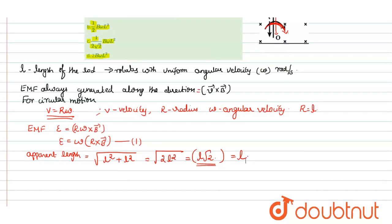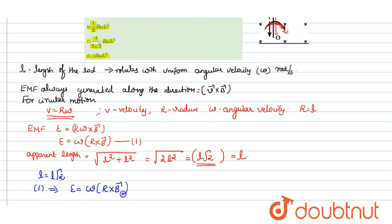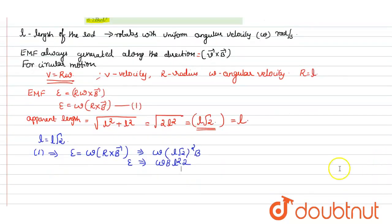In equation 1, r is nothing but the apparent length L, so r equals l root 2. Substituting into equation 1: EMF = omega times (l root 2) squared times B, which gives EMF = omega times B times 2 l squared, or epsilon equals 2 omega B l squared.